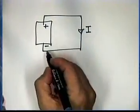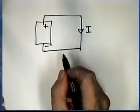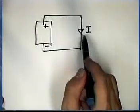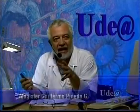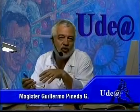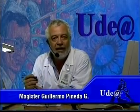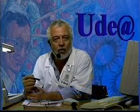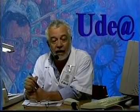Un circuito eléctrico se puede caracterizar, tal como hizo Joule, por la cantidad de calor que se desprende cuando circula la corriente eléctrica. Utilizamos sistemáticamente el efecto Joule para cocinar y calentar: los calentadores, las parrillas y los fogones funcionan por el efecto Joule, que es el efecto por el cual, cuando una corriente eléctrica circula en un conductor, se desprende calor.